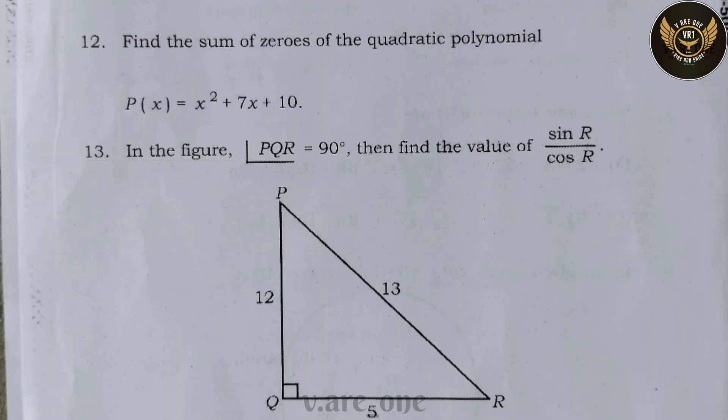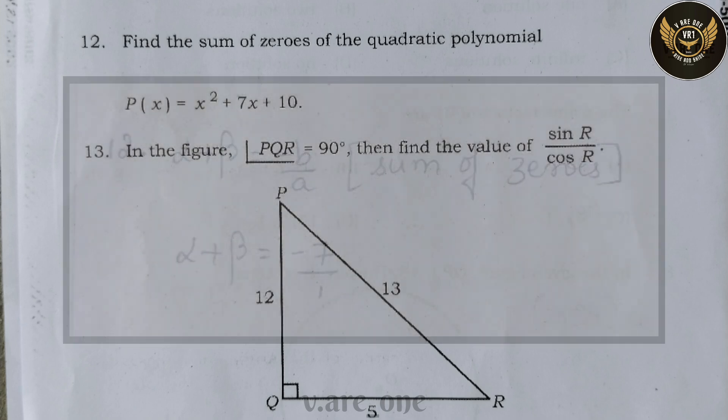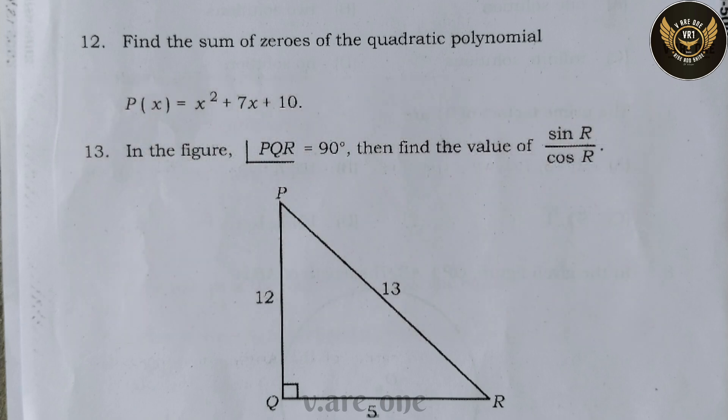Twelfth question: find the sum of the zeros of the quadratic polynomial — the correct answer is −7. Thirteenth question: in the figure, angle PQR = 90°, find the value of sin R / cos R.